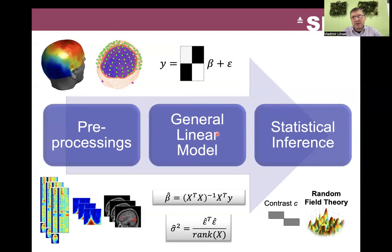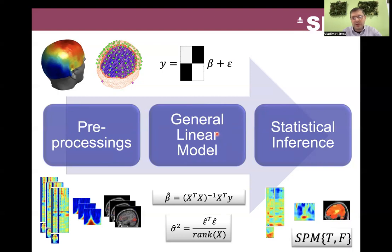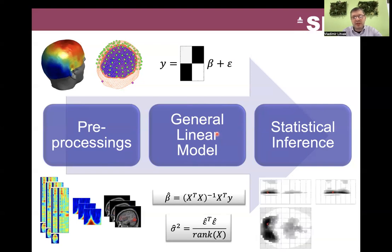To those statistical images you can apply random field theory to produce thresholds. Eventually, those thresholded images represent statistically significant effects, and this is what you can report in your publication.